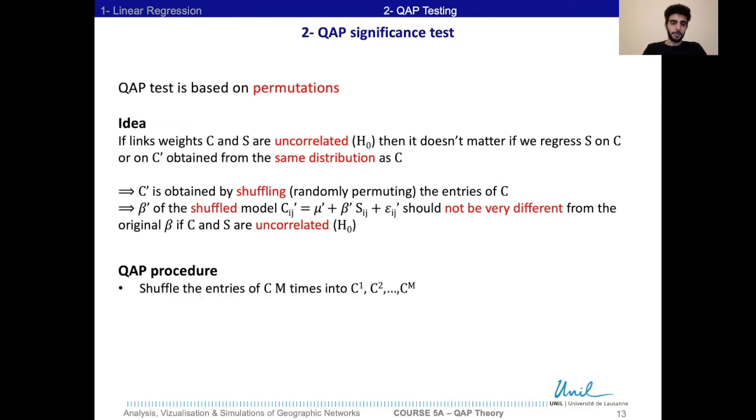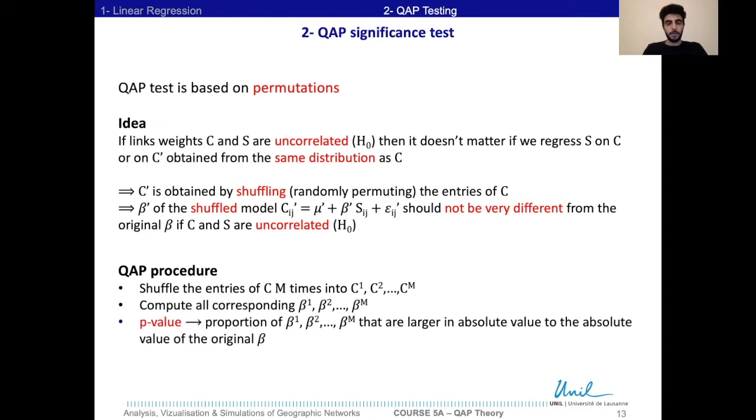So the procedure here is to shuffle the entries of C m times into m shuffled matrices, then we compute all the corresponding betas, and then the p-value would be the proportion of the betas that are obtained that are larger in absolute value to the absolute value of the original beta.